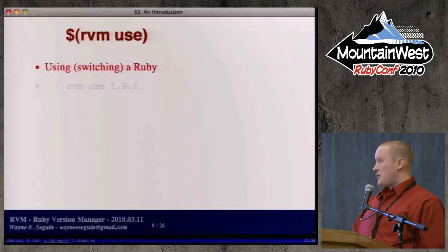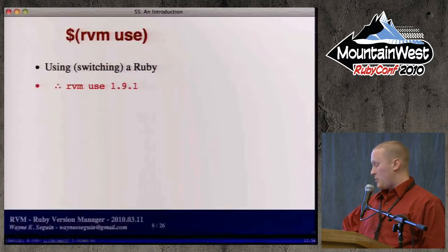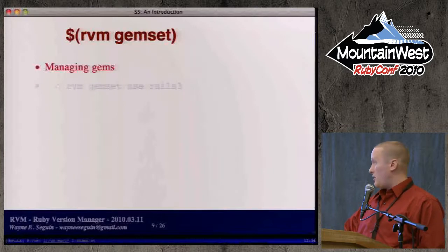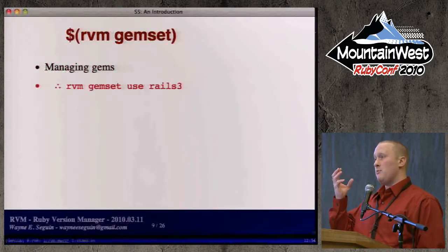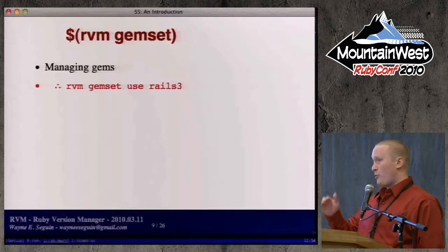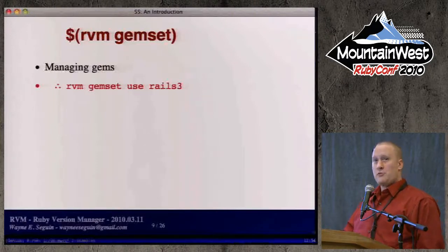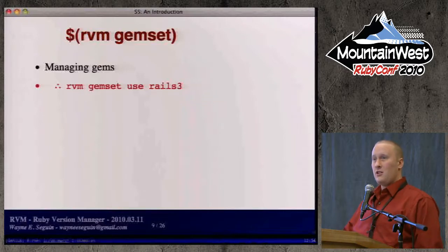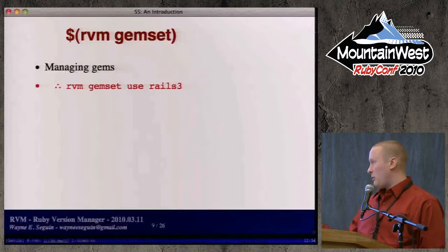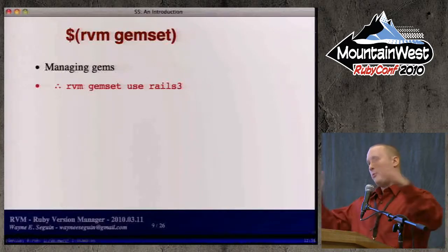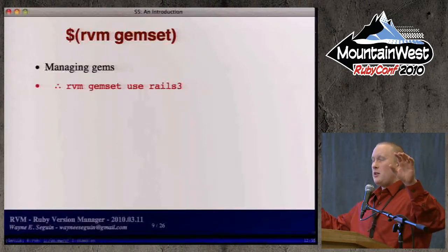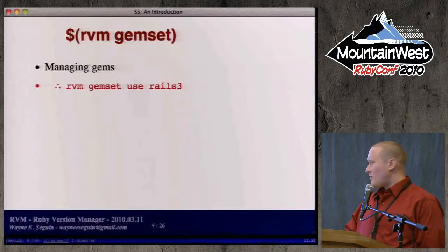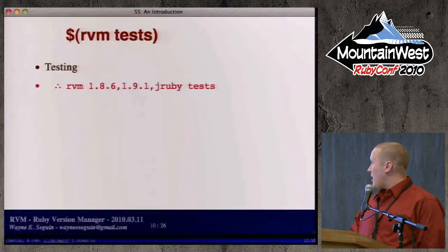To use a Ruby in your current shell, you just do 'rvm use 1.9.1' and that switches to 1.9.1. Gem sets allow you to create a system-level directory of sets of gems for specific projects. So if you're messing around with Rails 3 and don't want that to affect your current work, you can use RVM to completely self-contain it. You can play around with Rails 3 on JRuby, on 1.9, and on all other interpreters simultaneously — literally open four or five shells, each with a different gem set and Ruby, all running Rails 3 at the same time.